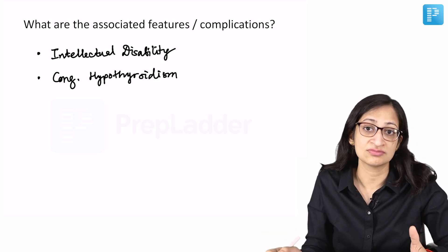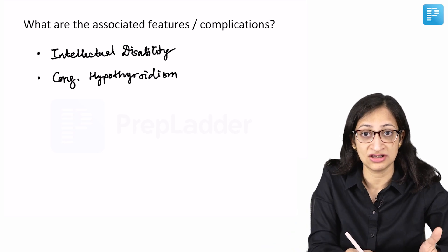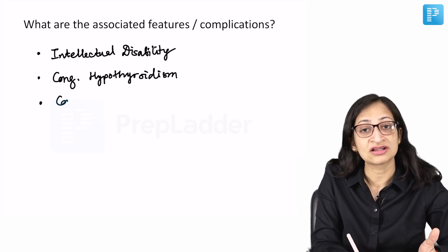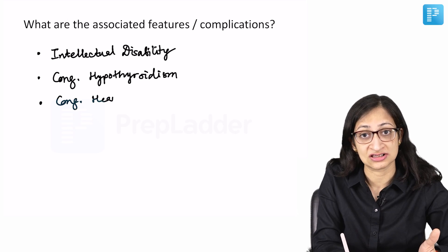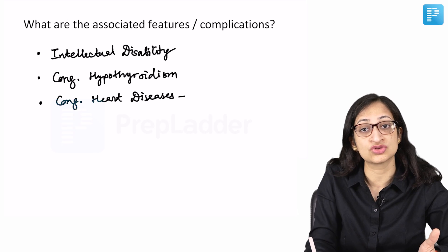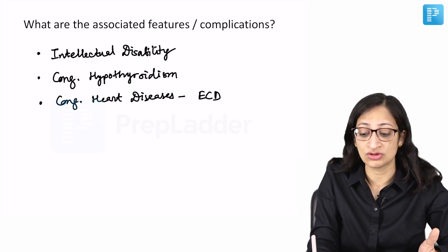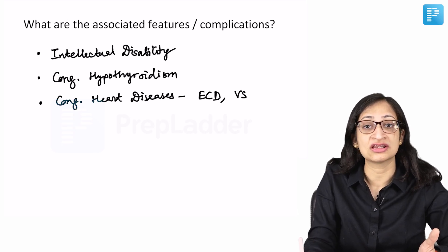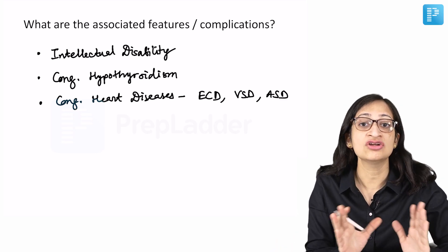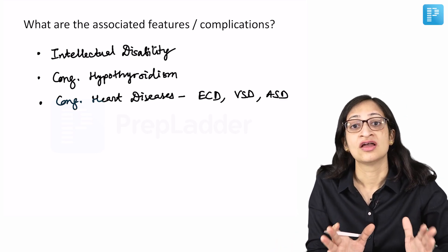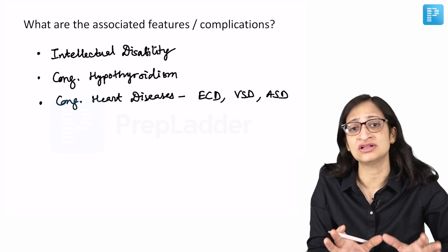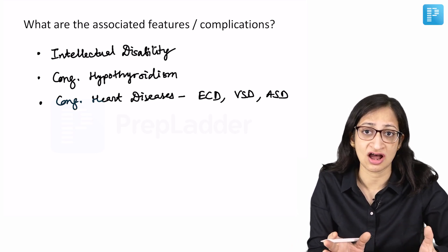Congenital hypothyroidism is very commonly associated with Down syndrome and you have to monitor for it continuously and treat it if present. Apart from that, there can be congenital heart diseases like endocardial cushion defect, ventricular septal defect, atrial septal defect, PDA, or Tetralogy of Fallot. Almost 50% of babies with Down syndrome have some congenital heart disease.